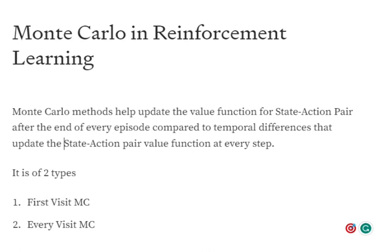This is different from temporal difference. In temporal difference, using the Bellman equation, we update the value function for the state-action pair then and there — we take an action and immediately update the value function. But not in Monte Carlo. Monte Carlo requires you to complete the whole episode first, and only then update the state-action pair value function. Monte Carlo is of two types: first visit Monte Carlo and every visit Monte Carlo.